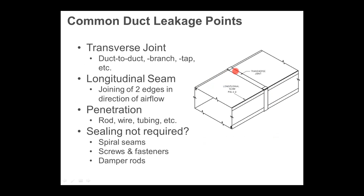Traverse joints run cross-sectionally — left to right on the ductwork. Longitudinal seams run the long way. Rectangular duct has four longitudinal seams; round pipe typically has just one. The longitudinal seams usually aren't that bad — they're actually pretty decent, which is why low-pressure systems don't require you to address them as much. The traverse joints tend to be worse, and the corners are typically the worst points. When doing pressure testing with smoke pens or theatrical smoke machines, you tend to see leakage coming out of those four corners.